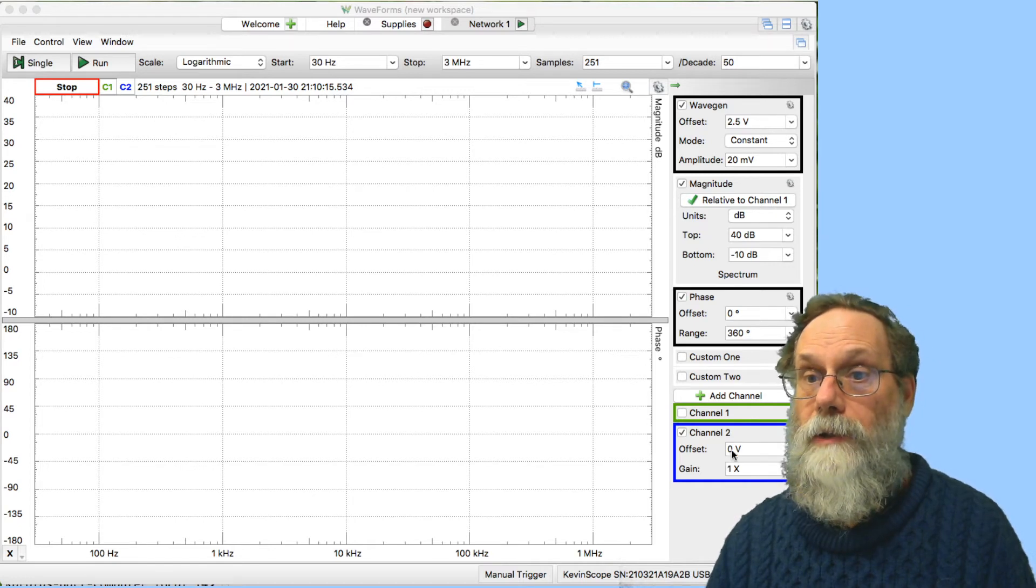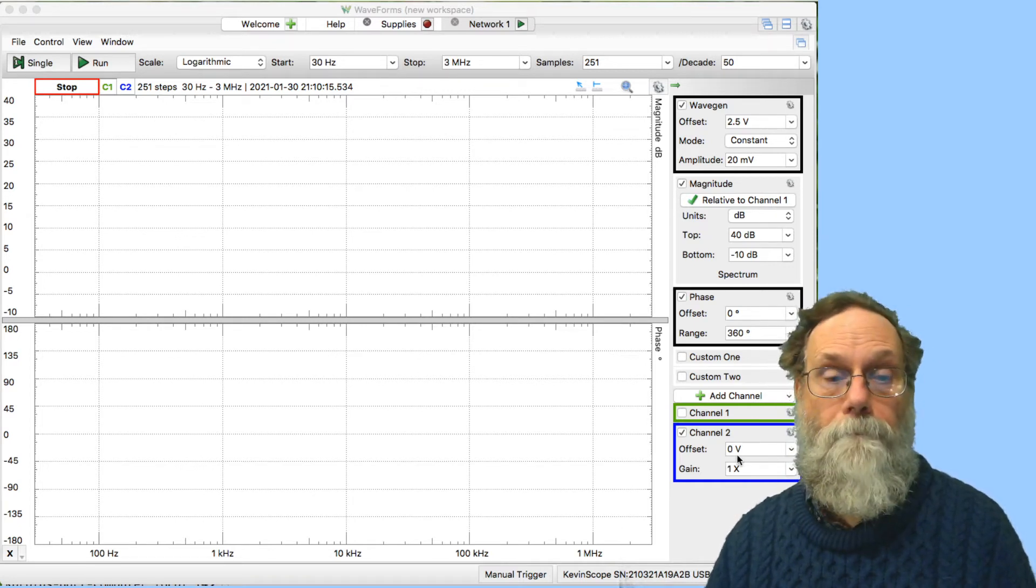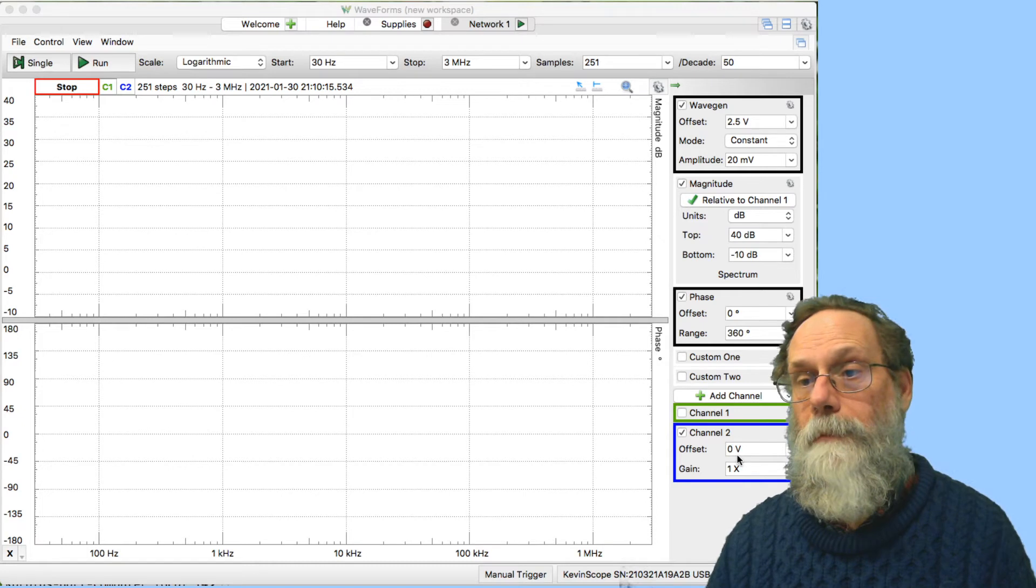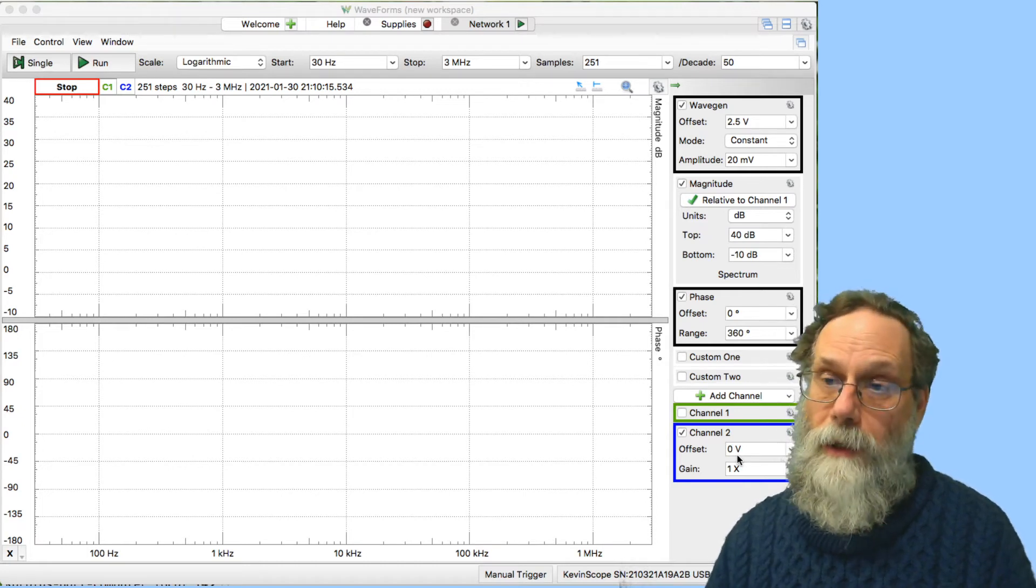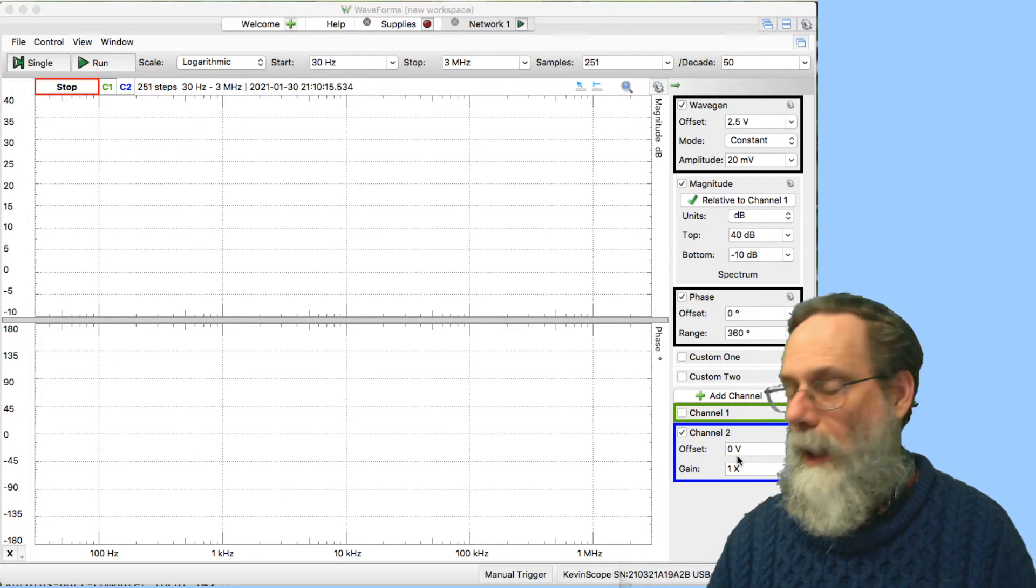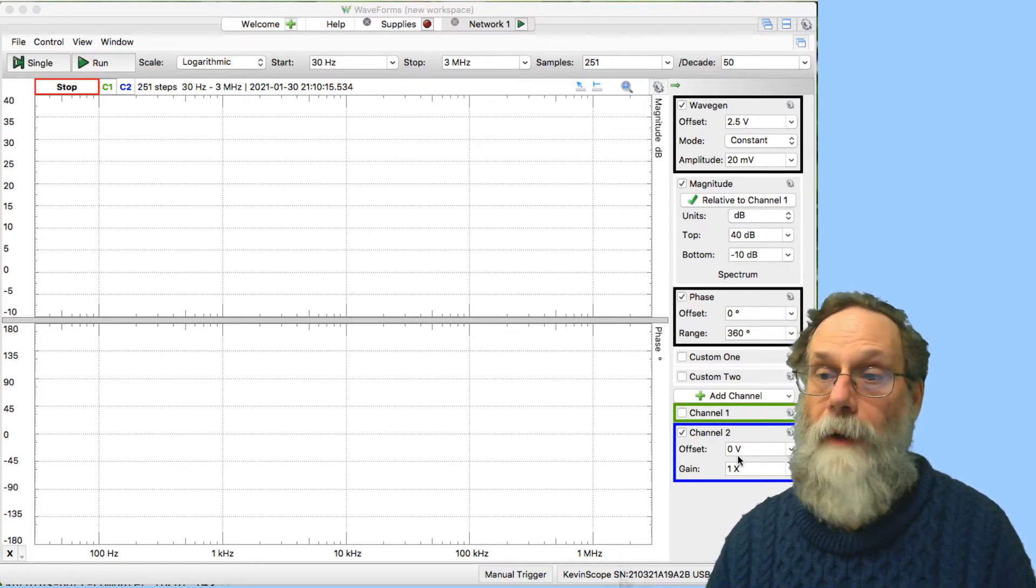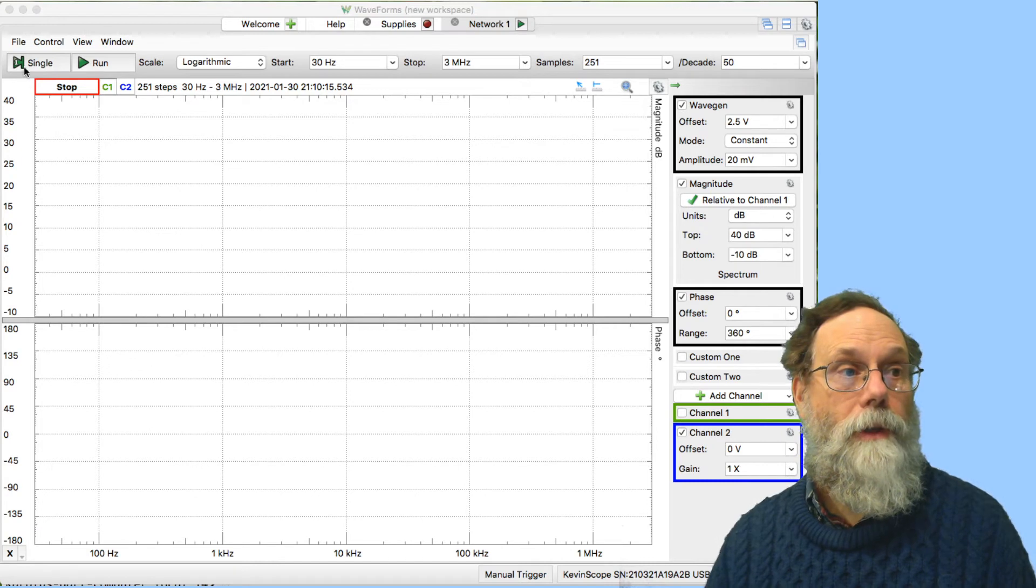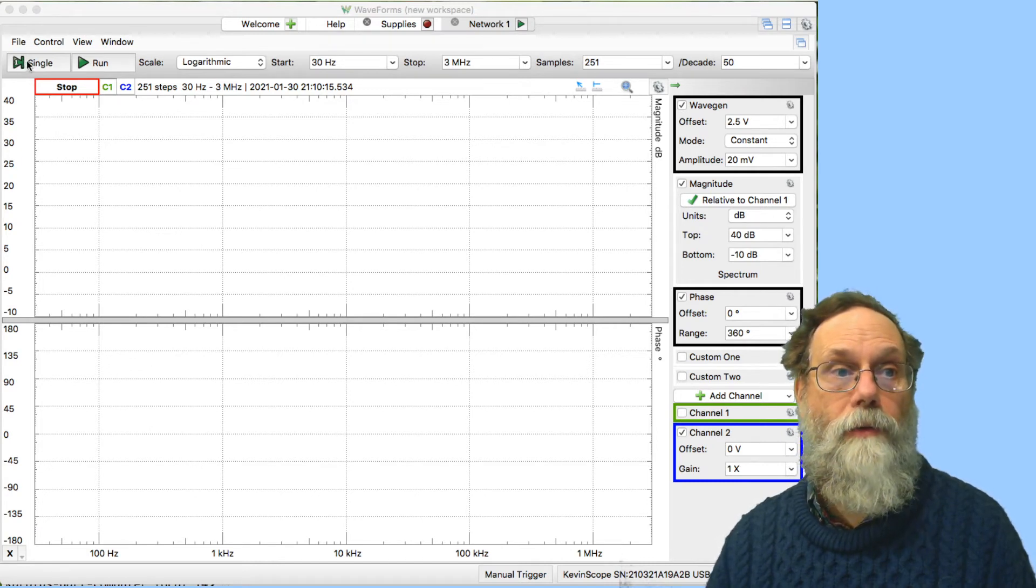However, I do have on channel 2 an offset of 0 volts, because I'm measuring channel 2 with respect to that 2.5 volts that I put in on the VREF. So let's just do a single run of this from 30 hertz to 3 megahertz.